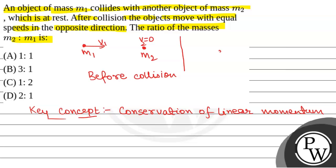After collision, m1 moves with speed v and m2 also moves with speed v, but both move in opposite directions. We have to find the ratio m2 to m1, so we will apply conservation of linear momentum.